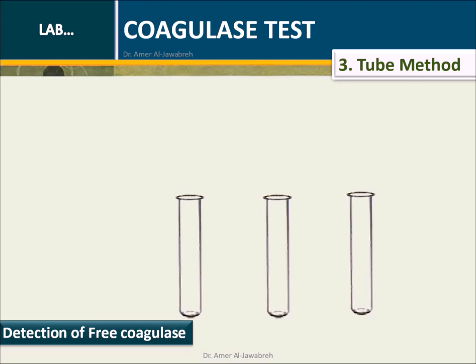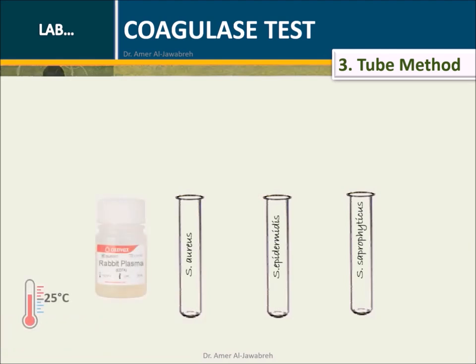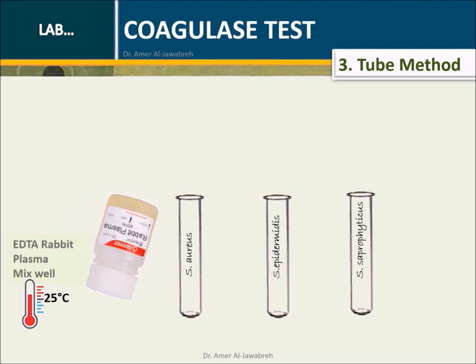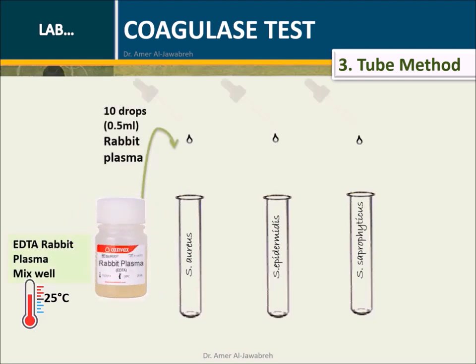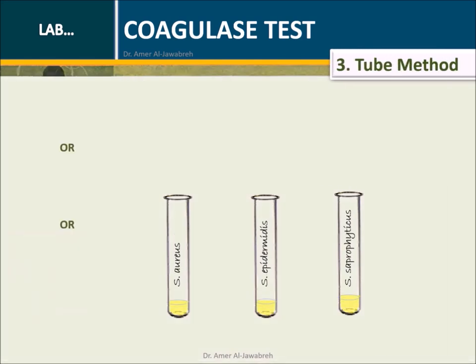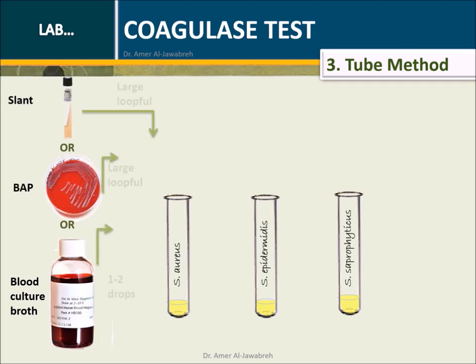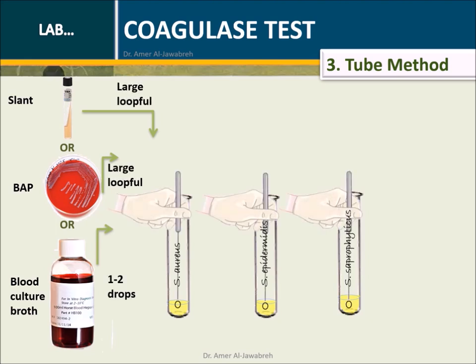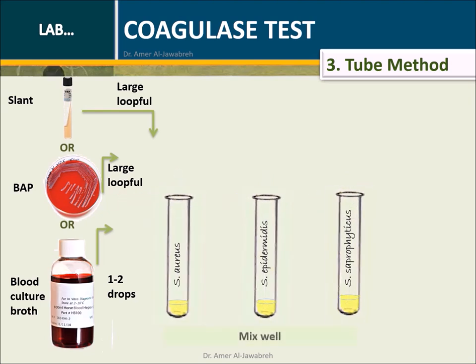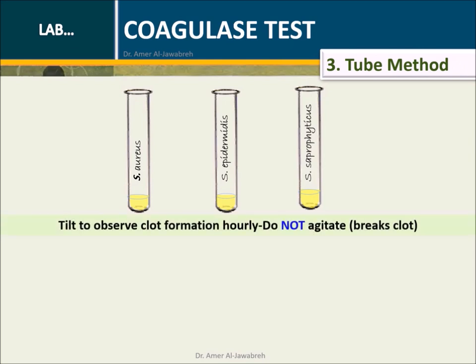Tube method: Label tubes. Mix plasma well. Add 10 drops of plasma into each tube. Emulsify a large loopful of colonies into the tube, or one drop in the case of broth culture. Mix tubes well. Tilt to observe clot formation hourly at 35 to 37 degrees centigrade.